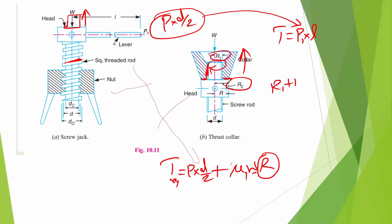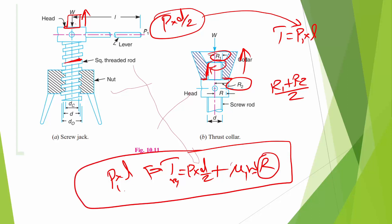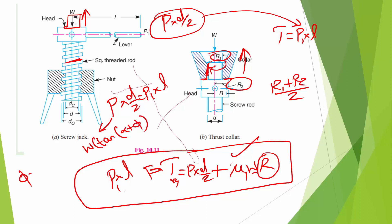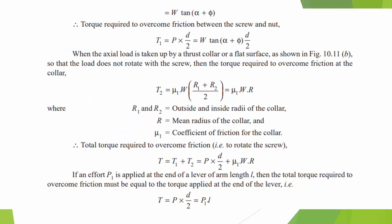The mean radius R = (R₁ + R₂) / 2. The total torque equals P₁ × L. If the load does not rotate, torque equals P₁ × L. In the P formula: P = W·tan(α + φ), where φ = tan⁻¹(μ) and μ is the coefficient of friction. Using this formula, we can solve the problem.